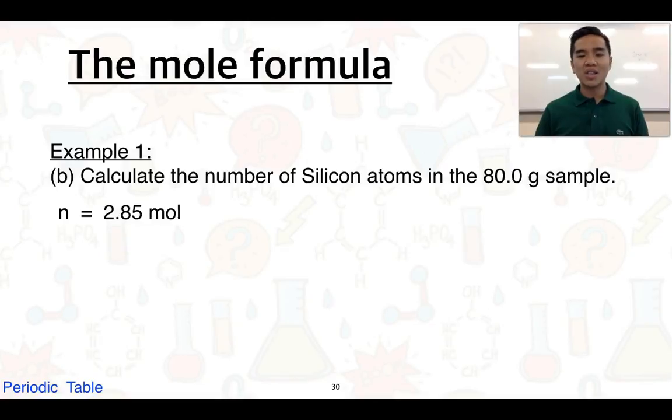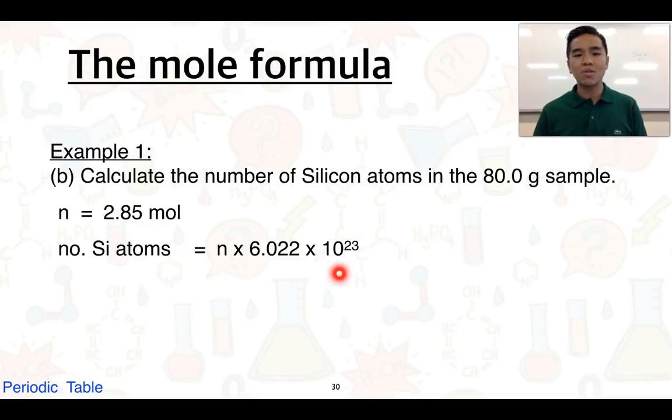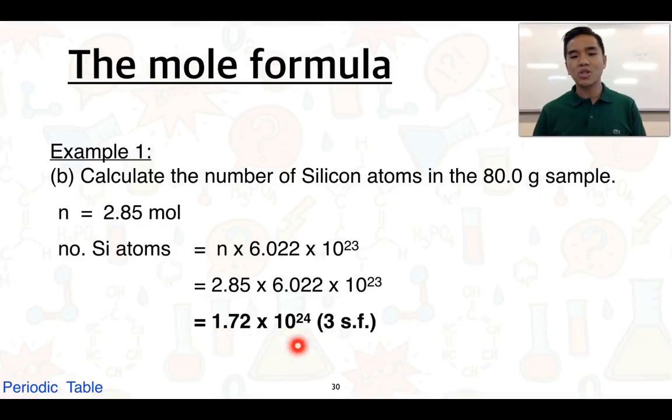The number of silicon atoms equals the number of moles multiplied by the amount present in one mole—the Avogadro constant. We substitute our answers in. It's good practice to leave your answers in your calculator for the next part of your calculation. We get 1.72 × 10²⁴, with no units because we're talking about numbers of atoms, recorded to three significant figures.